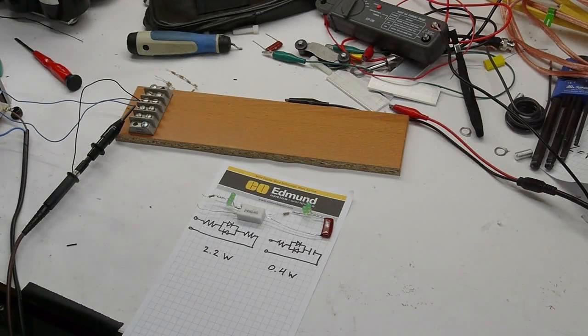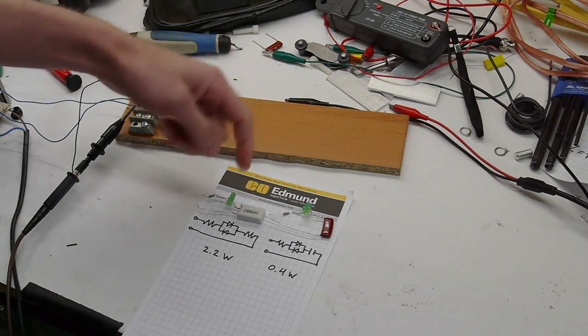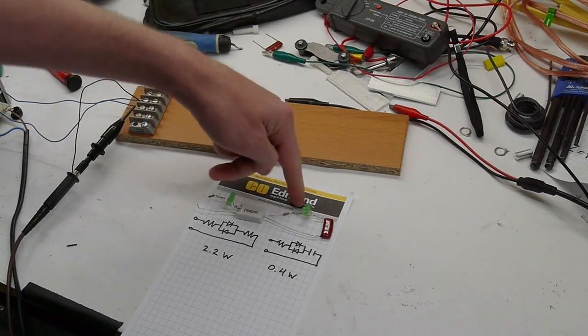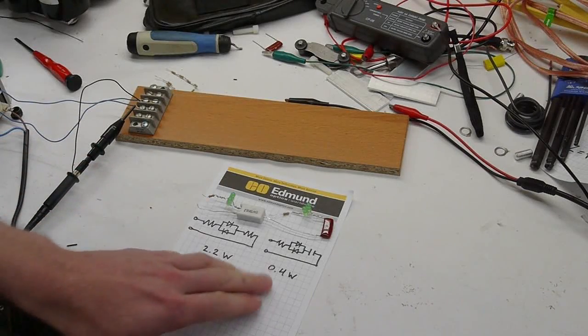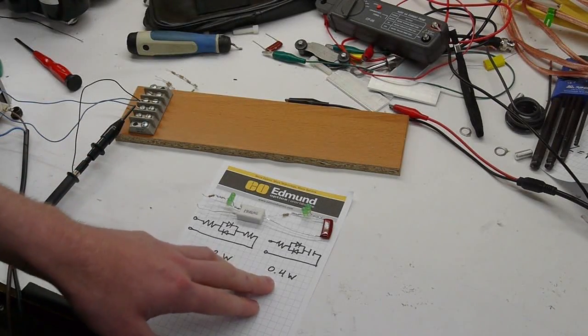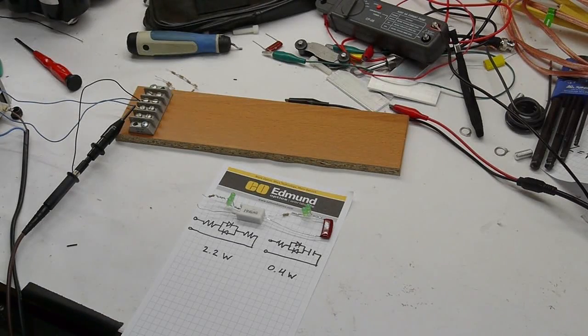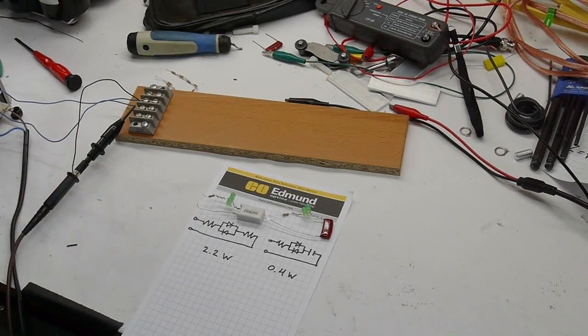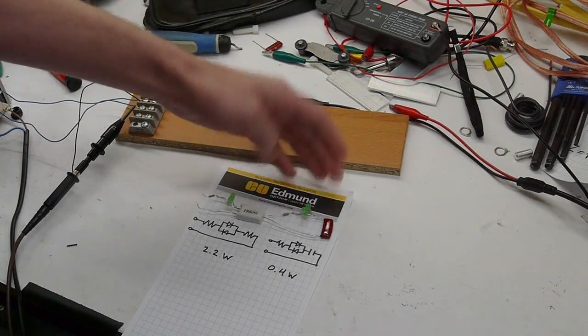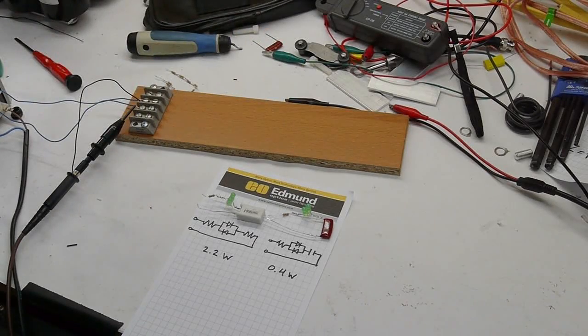At the end of the last video, we were comparing these two circuits here. This one built with a resistor, and this one built with a capacitor. I left off by asking the question: how is it possible that the capacitor circuit only draws 0.4 watts using this kilowatt power meter, and yet the resistor circuit draws 2.2 watts? But in both cases, the LEDs are about the same brightness. So it seems like we're kind of getting something for nothing here.